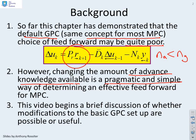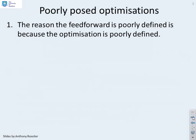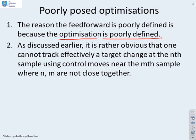This video begins a brief discussion of whether there are other modifications to a basic GPC setup which are possible or useful. The reason why the feedforward is poorly defined in general is because the optimisation is poorly defined. The main issue is you cannot effectively track a target change at the Nth sample using control moves at the Nth sample if N and M are not close together. So if you want a sensible optimisation, you need to make sure that your degrees of freedom overlap with where you want all the key dynamics to happen.